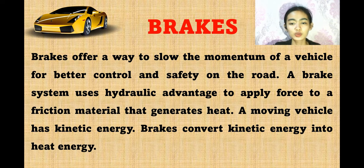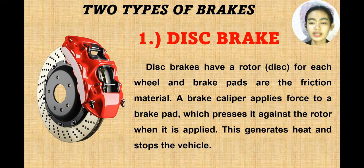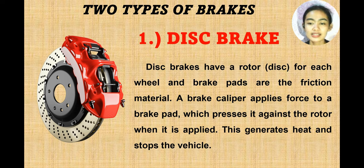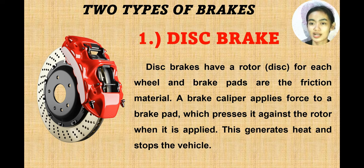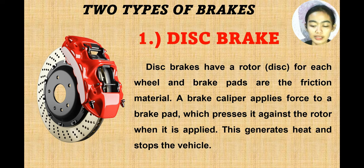There are two types of brakes. Number one is the disc brake. Disc brakes have a rotor for each wheel, and brake pads are the friction material. A brake caliper applies force to a brake pad, pressing it against the rotor. When applied, this generates heat and stops the vehicle. The calipers are visible as the red cover, and the brake pads are located at the bottom of the calipers.